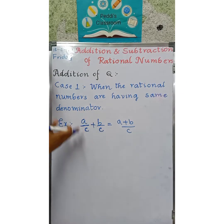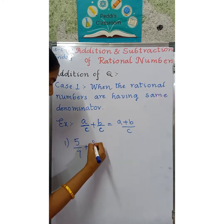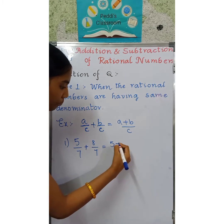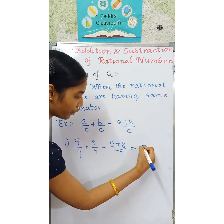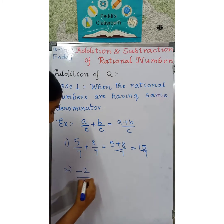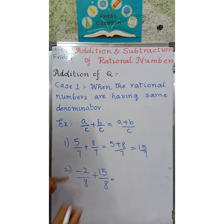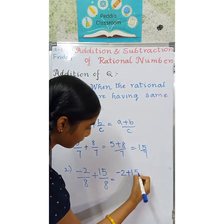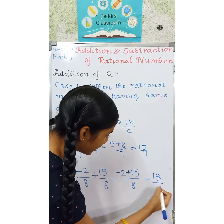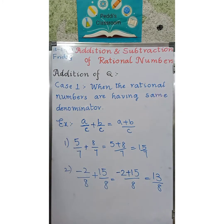So in this way, if they have the same denominator, we need to do the addition. For example, 5 by 7 plus 8 by 7 is equal to 5 plus 8 by 7, that means 15 by 7. Another example: minus 2 by 8 plus 15 by 8 is equal to minus 2 plus 15 by 8, that means 13 by 8. This is about addition of rational numbers when they have the same denominator.